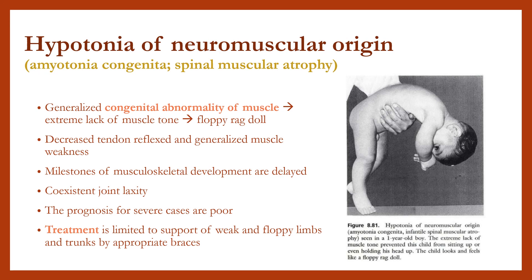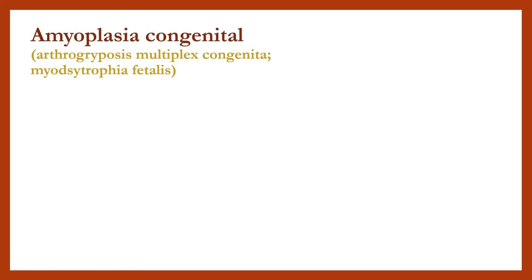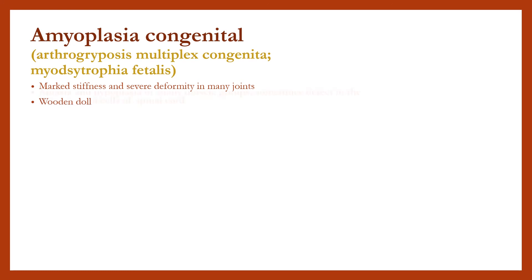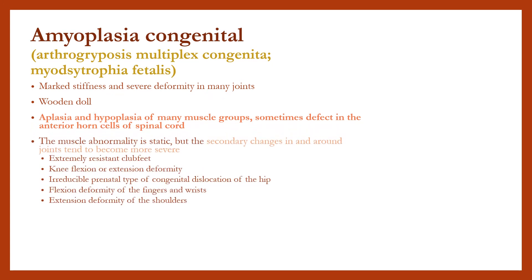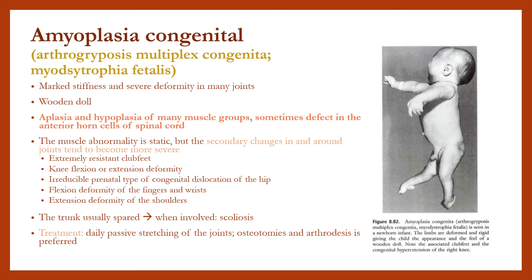Amyoplasia congenita is marked by stiffness and severe deformity in many joints, with the child looking like a wooden doll. There is aplasia and hypoplasia of many muscle groups, sometimes with defects in the anterior horn cells of the spinal cord. The muscle abnormality is static, but secondary changes in and around joints tend to become more severe. The trunk is usually spared; when involved, scoliosis occurs. Treatment involves daily passive stretching of the joints; osteotomies and arthrodesis are also preferred options.